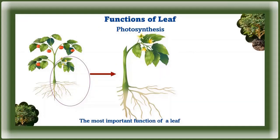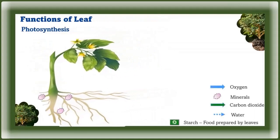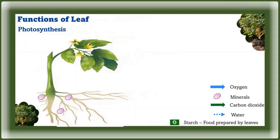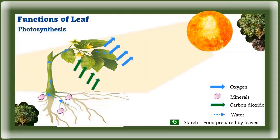Functions of a leaf: A leaf is called the kitchen of the plant because it is the main organ responsible for photosynthesis, through which the plant produces its food. Leaves obtain their green color due to the presence of chlorophyll. Photosynthesis is the most important function of a leaf — plants are living things and need food and water to survive, and leaves prepare food for the whole plant.